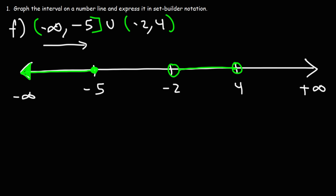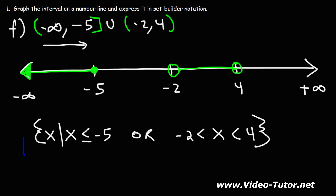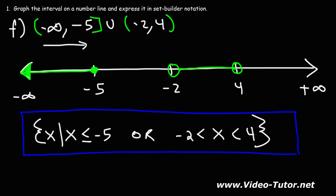Now let's focus on writing it in set builder notation. For the first interval, x is less than or equal to negative 5 — it includes negative 5. We connect it with the second interval using an or statement. Now x is less than 4 — it doesn't include 4 — but it's greater than negative 2, and doesn't include negative 2 since we have an open circle. And that's basically it. Now you know how to convert a mathematical expression from interval notation to set builder notation. Thank you.